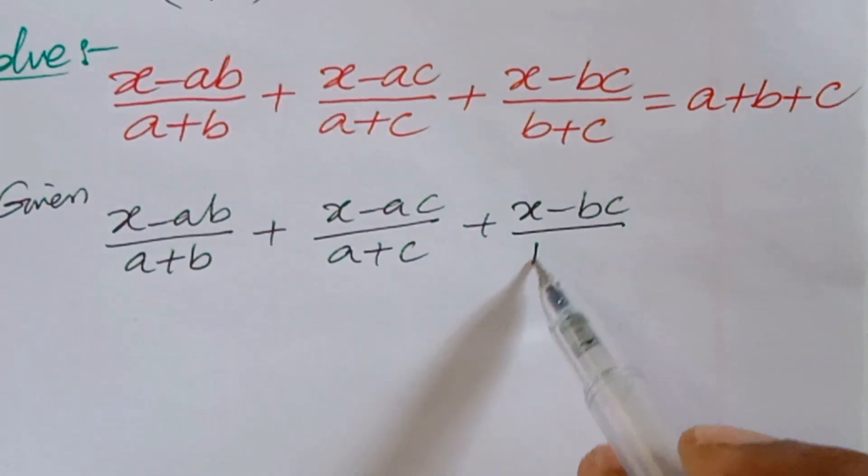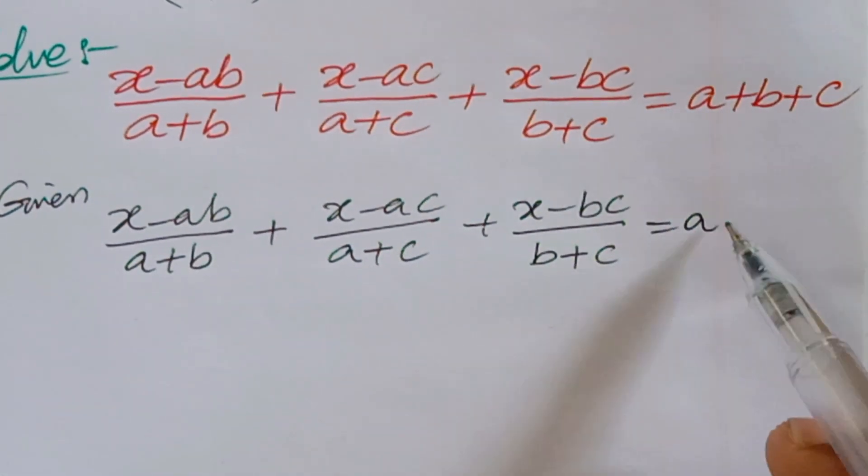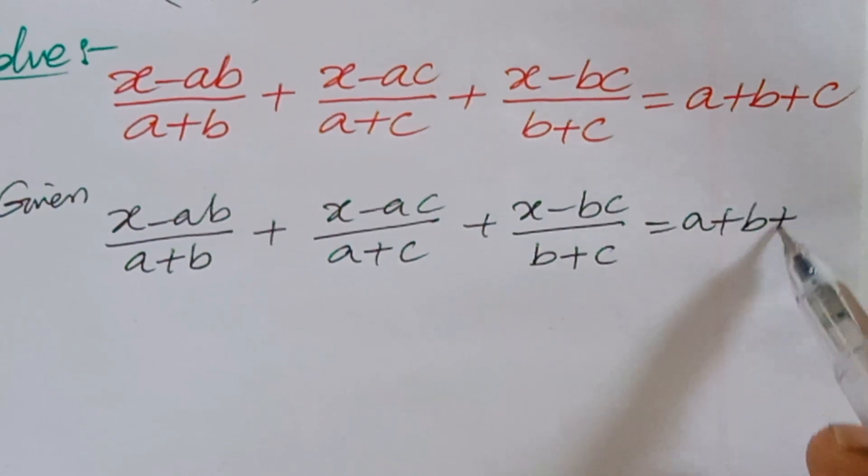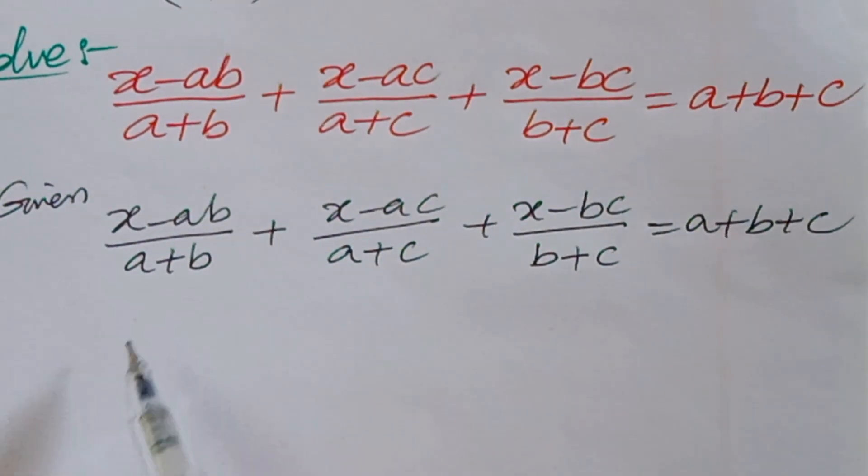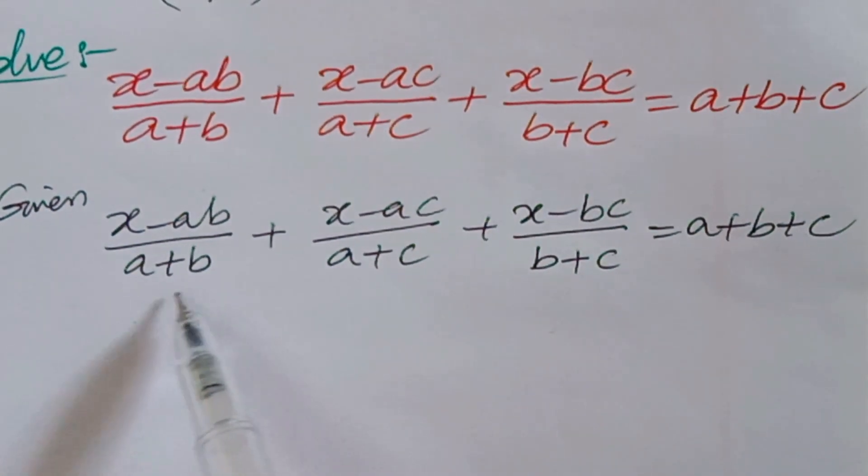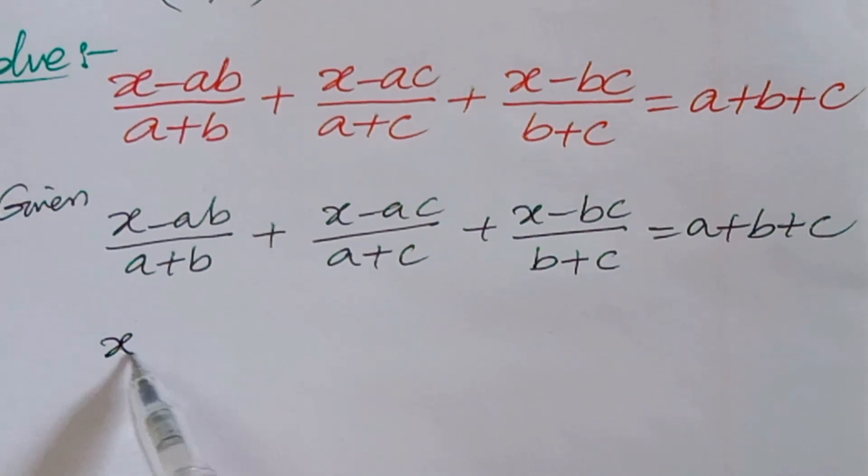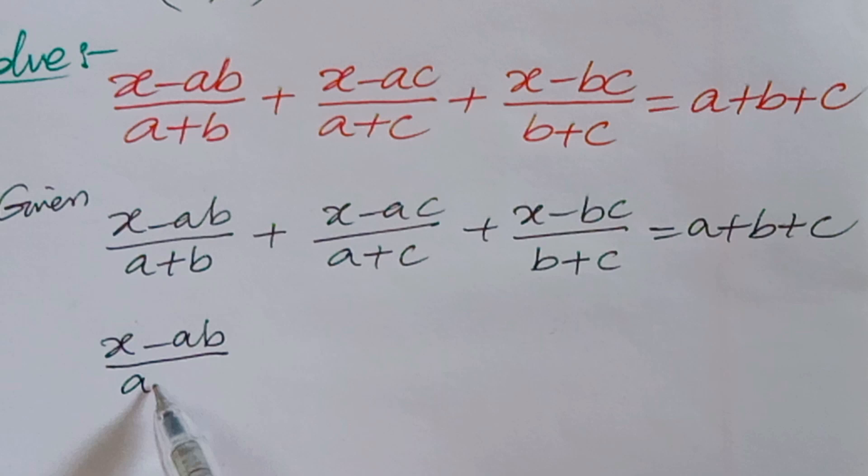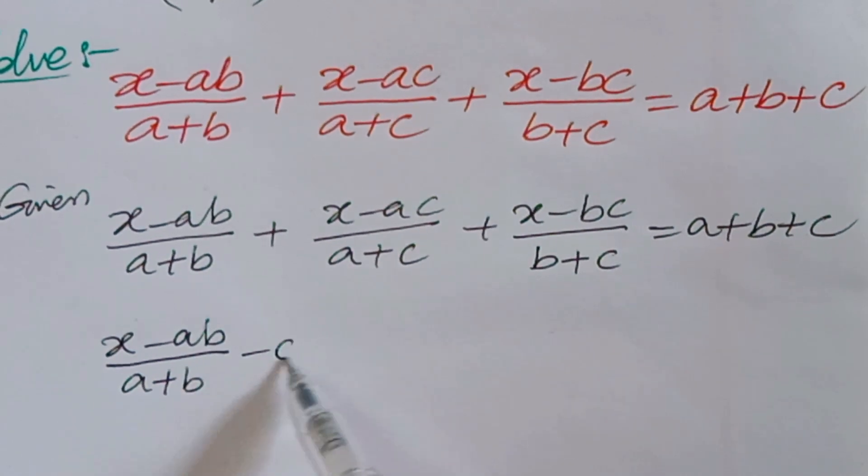You have to send all the terms to one side. Here, already in the first denominator a + b is there. The first one, what you have to do is (x - ab)/(a + b) minus c.